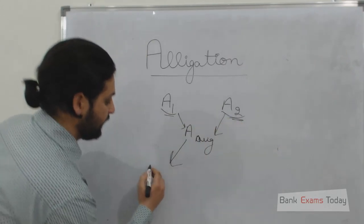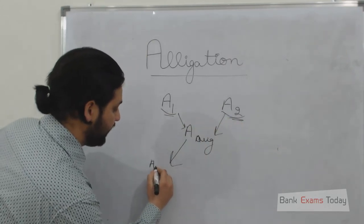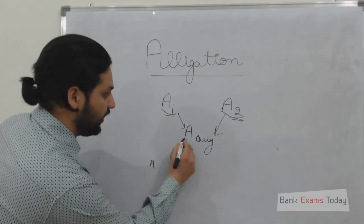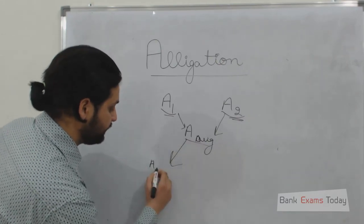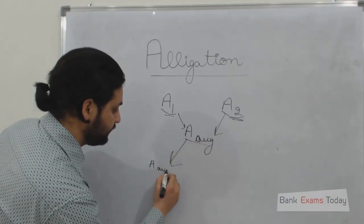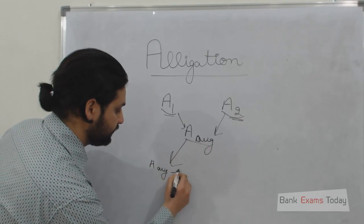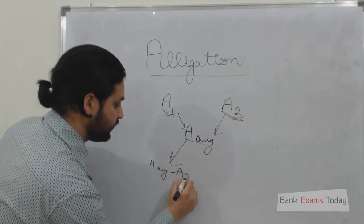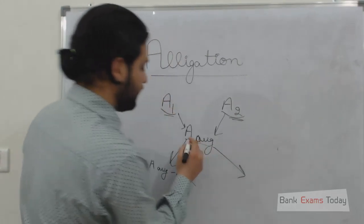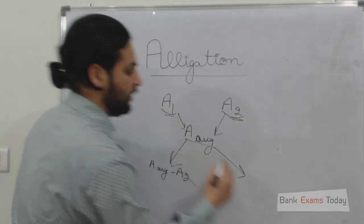Simply deduct a2 from the average, and deduct the average from a1.